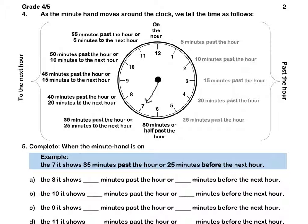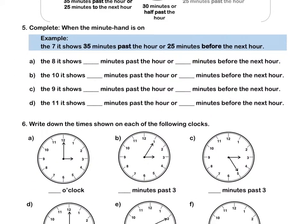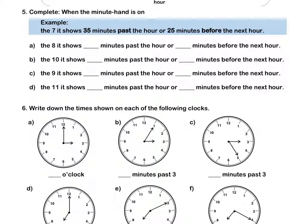Let's look at question 5. When the minute hand is on the 7, it shows 35 minutes past the hour or 25 minutes before the next hour. When it is on the 8, it shows 40 minutes past the hour or 20 minutes before the next hour. Pause this video to complete question 5.